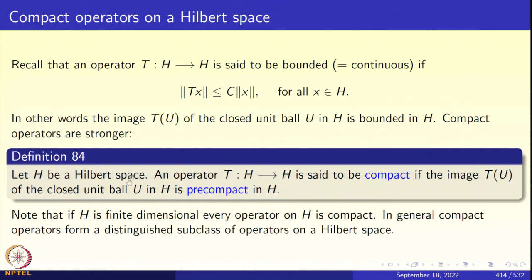Compact operators are stronger. We want the image of the unit ball to be pre-compact in H. A Hilbert space operator T from H to H is said to be compact if the image of the closed unit ball U under T is pre-compact in H. A set A in a metric space is pre-compact if its closure is compact. This definition carries over word for word for any Banach space. If H is a finite-dimensional Hilbert space, every operator is compact. In general, compact operators form a distinguished subclass.